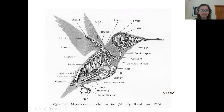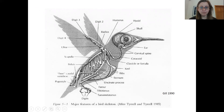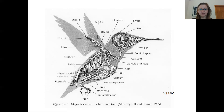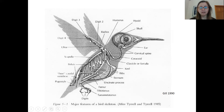Birds have a few post-caudal vertebrae — not many. These vertebrae past the pelvic girdle are fused to form a flat surface for the attachment of the rectrices, or tail feathers. This structure is called the pygostyle. Also worth noting, the tibiotarsus is a fusion of the tibia and some of the tarsal bones, and the tarsometatarsus is a fusion of the tarsal and metatarsal bones in the foot of birds — a similar theme of bone fusion as seen in the forelimb.